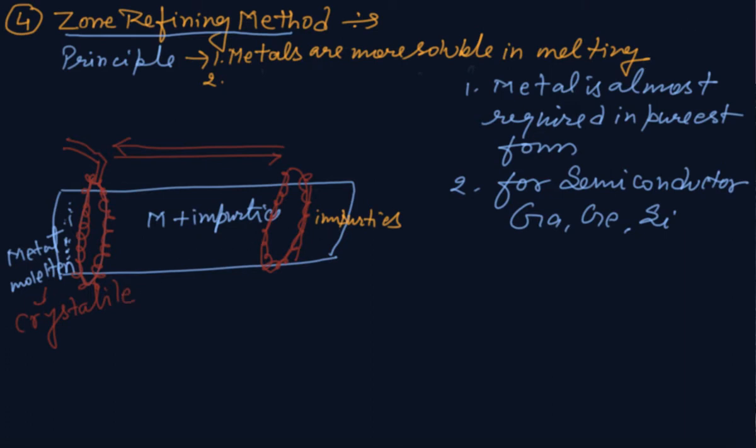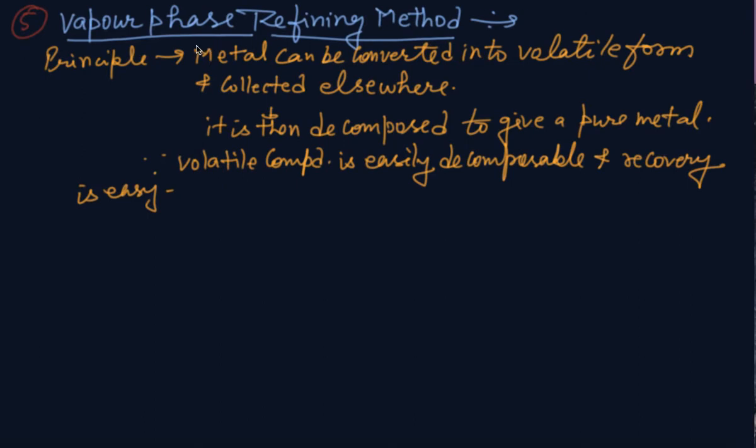Next method is vapor phase refining method. This is based upon volatility, means that metal can be volatile. So metal can be converted into volatile form. We will heat and it converts into vapors and is collected elsewhere. It is then decomposed to give pure metal. Volatile compound is easily decomposable and recovery is easy. It has two parts.